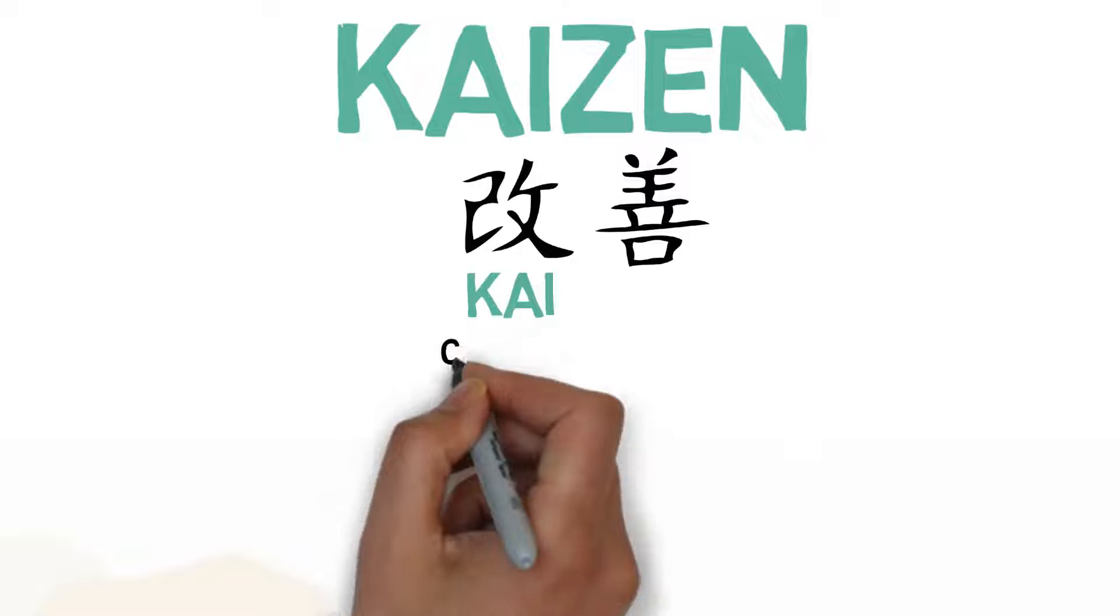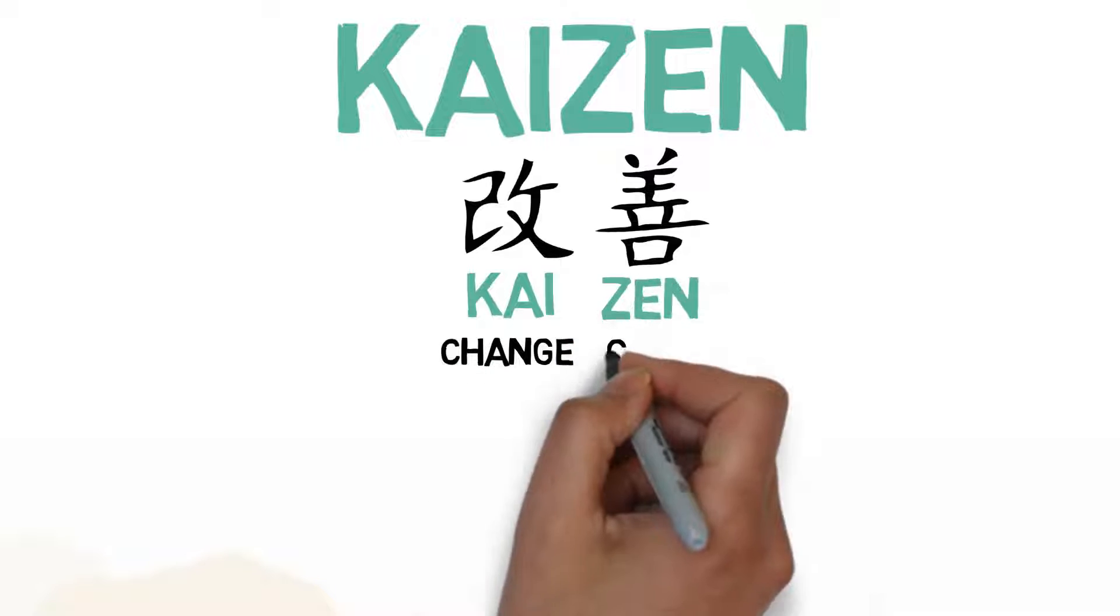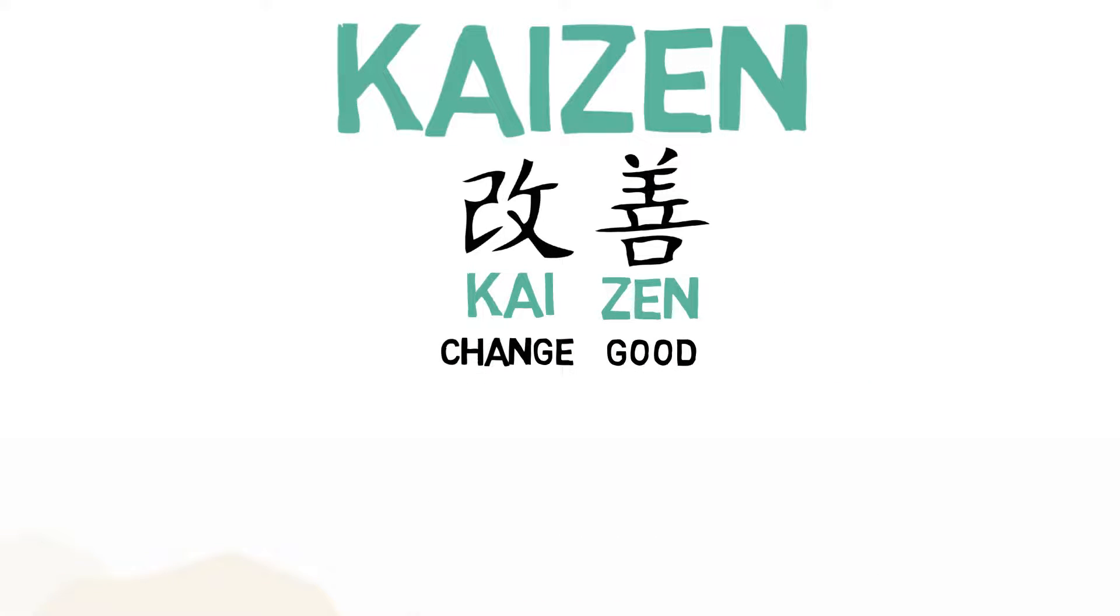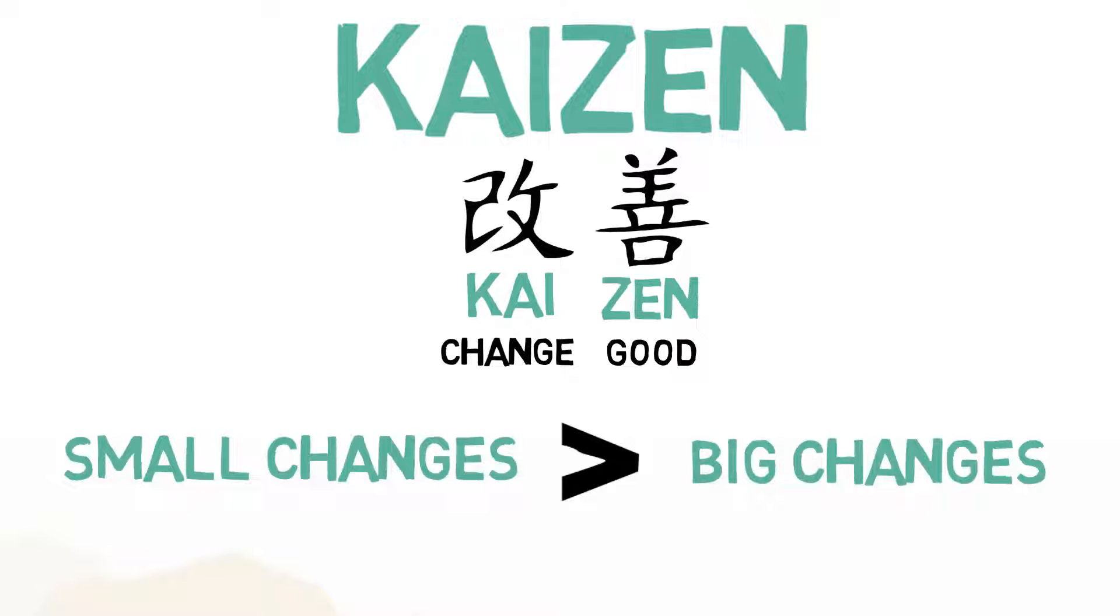Kaizen is a combination of the Japanese Kanji's Kai, which means change, and Zen, which means good. The Kaizen method is based on the idea that small ongoing positive changes are more beneficial than big changes.